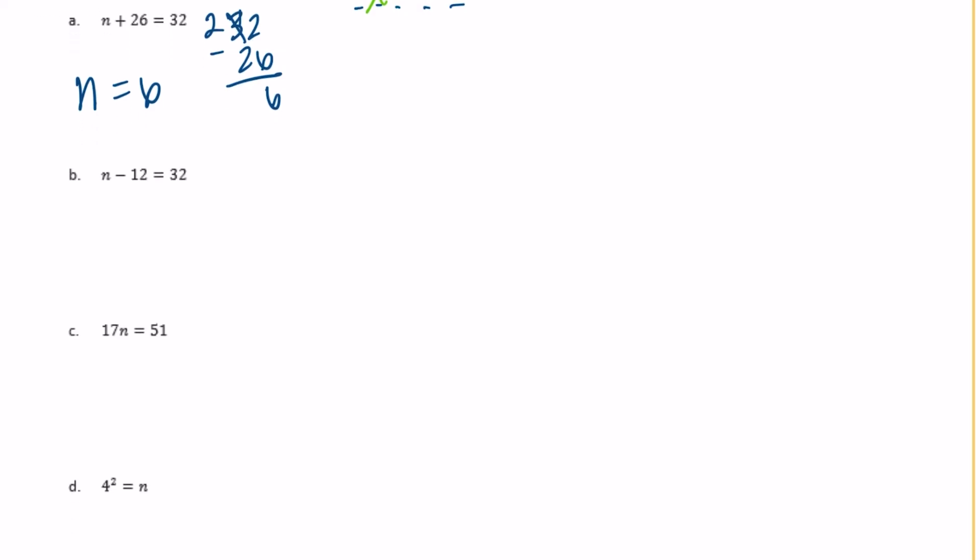So B, N minus 12 equals 32. So what minus 12 gets us 32? We can figure that out by adding them. That would be 44. So N needs to be equal to 44. So cross out 44.